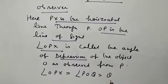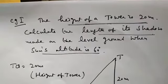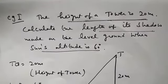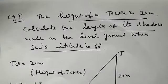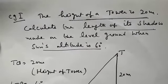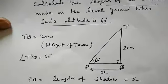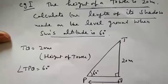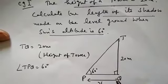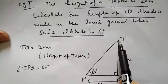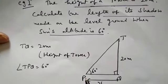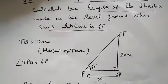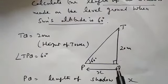Let's take one example. The height of a tower is 20 meters. Calculate the length of its shadow made on the level ground when the sun's altitude is 60 degrees. In this type of question, first read the statement carefully, then draw the figure accordingly. We have a tower TQ of height 20 meters. T is the top of the tower. The angle of the sun's altitude from P is 60 degrees, and the length of the shadow is X.